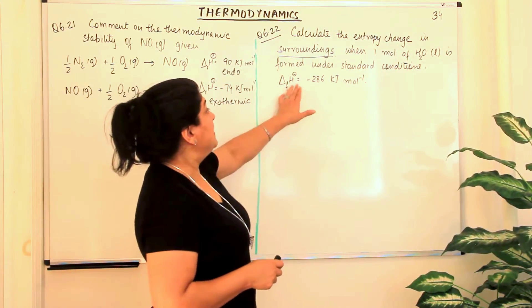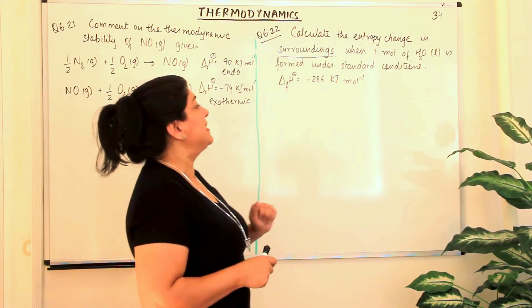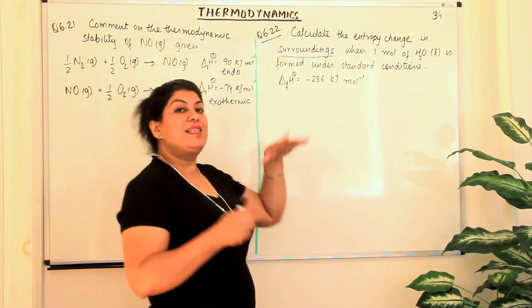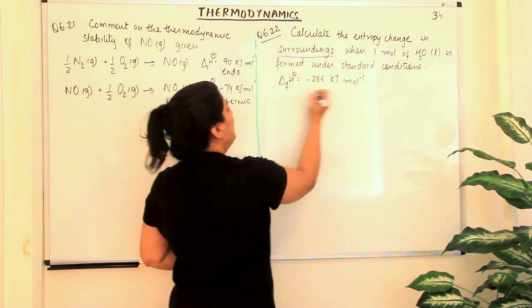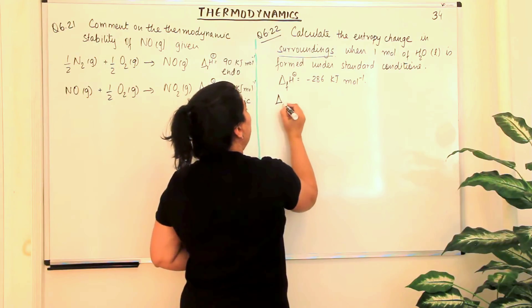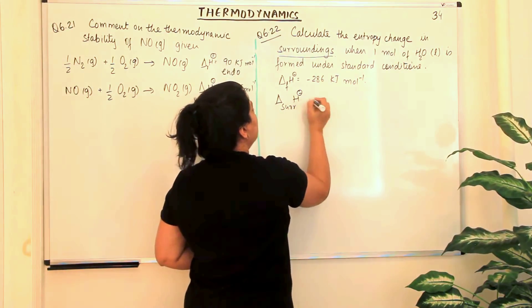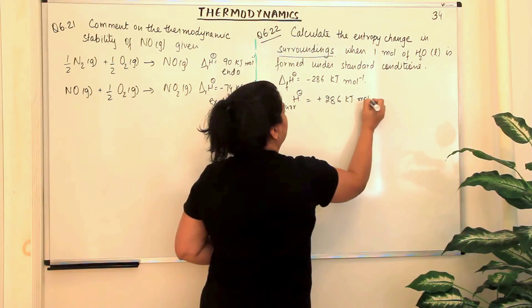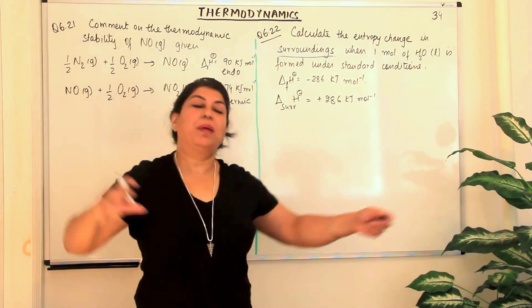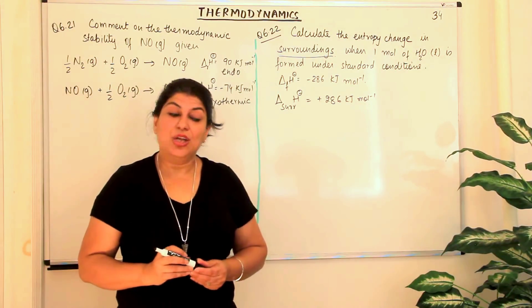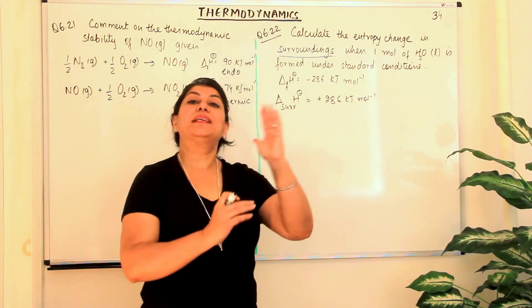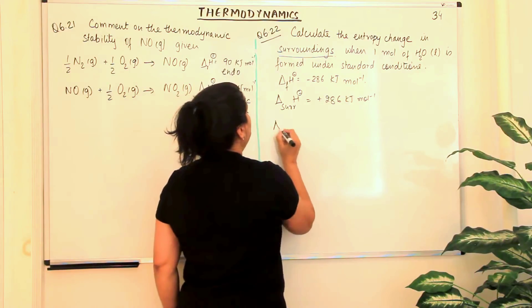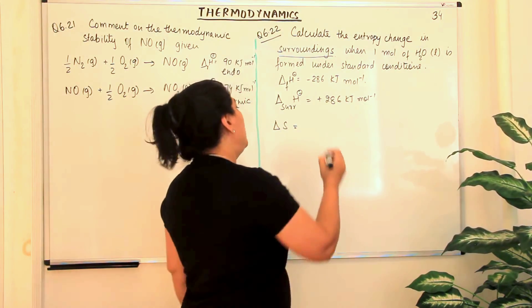Of this reaction, the formation of water, the enthalpy of formation of water is minus 286 kJ per mole. A negative value means it is exothermic. If it is exothermic, what is the enthalpy change in the surroundings? If this much heat was given out by the system, this much heat was absorbed by the surroundings. So you only have to change the sign, it would become 286 kJ per mole. This is the enthalpy change for the surrounding, only the sign changes. And what is delta S in terms of enthalpy? We know delta S is equal to Q upon T.